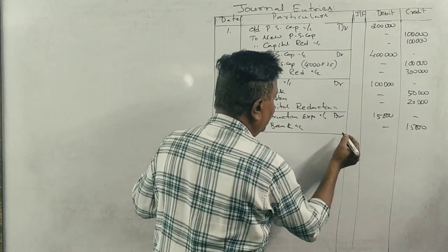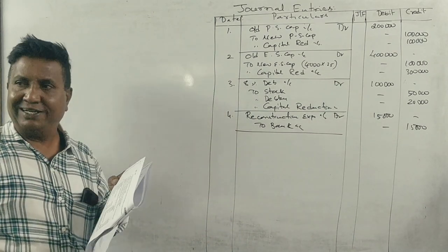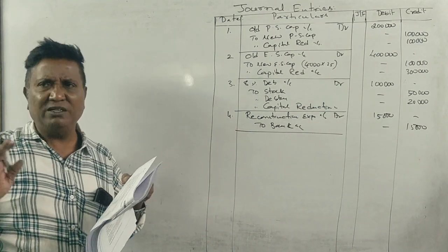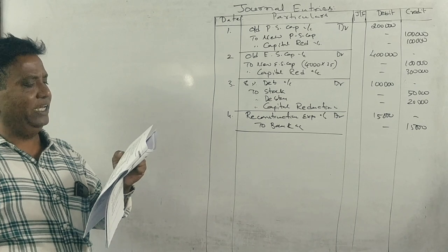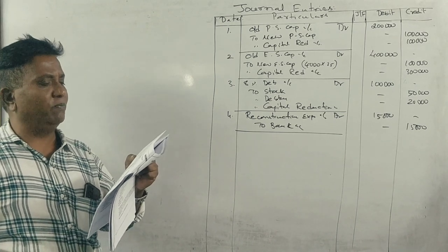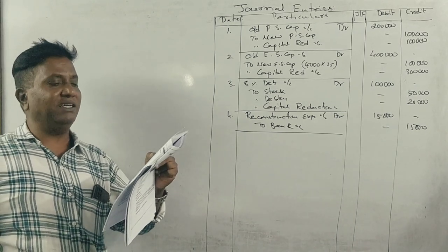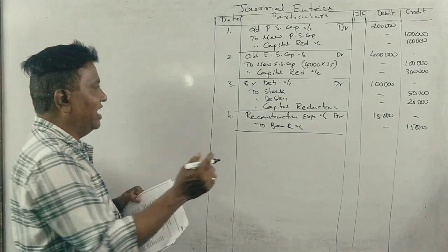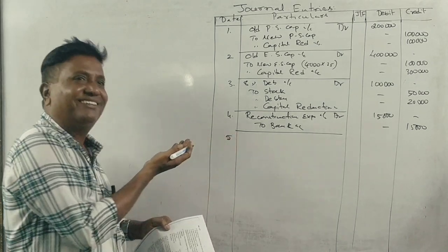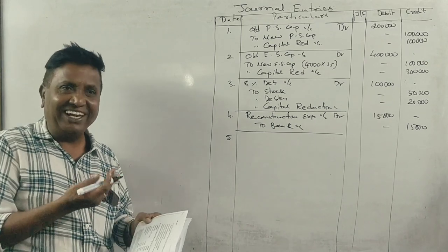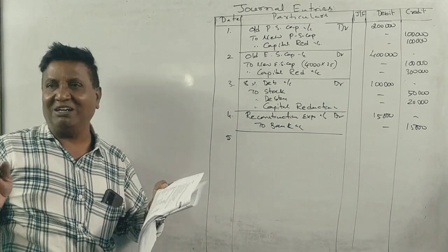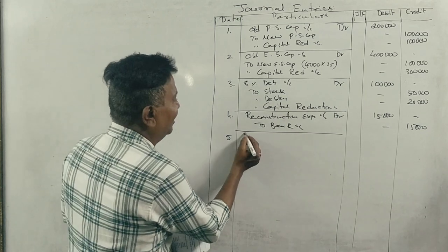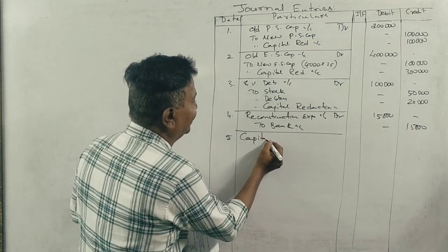To eliminate goodwill, profit and loss account, plant is reduced to 50%. This entry uses the capital reduction account.